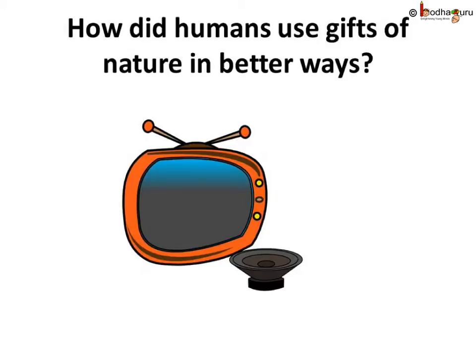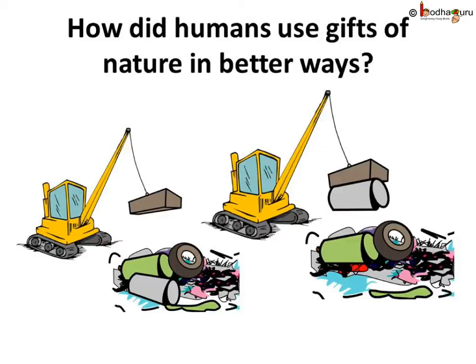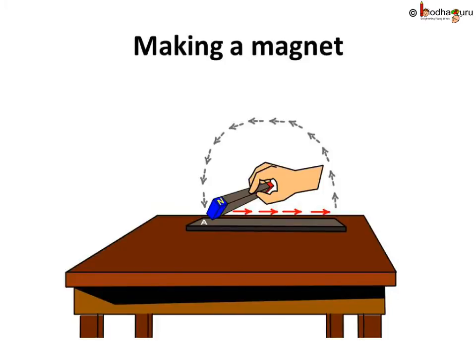We can make weak or strong magnets for different purposes like making a speaker in small radio to pulling a huge iron block by using the crane. How did we do that?